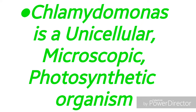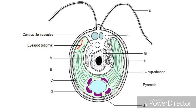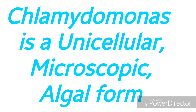Now let us learn about another interesting unicellular organism called Chlamydomonas. It is a microscopic photosynthetic organism — a single-celled organism. Here you can see the structure of Chlamydomonas. It contains a chloroplast and chlorophyll pigment to perform photosynthesis, which is the biochemical process of manufacture of food material.